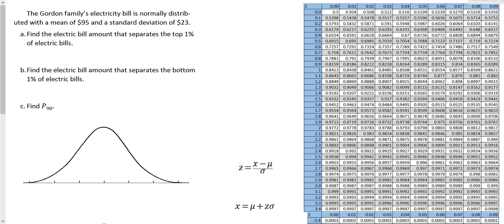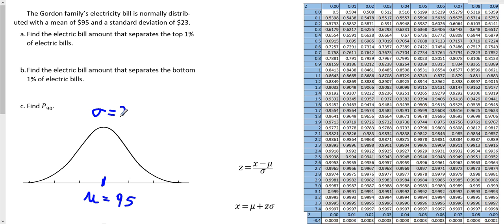Let's go ahead and take a look at the inverse normal distribution. Here's a problem: the Gordon family's electricity bill is normally distributed with a mean of $95 and a standard deviation of $23. So for this distribution, the mean is $95 and the standard deviation, sigma, is $23.